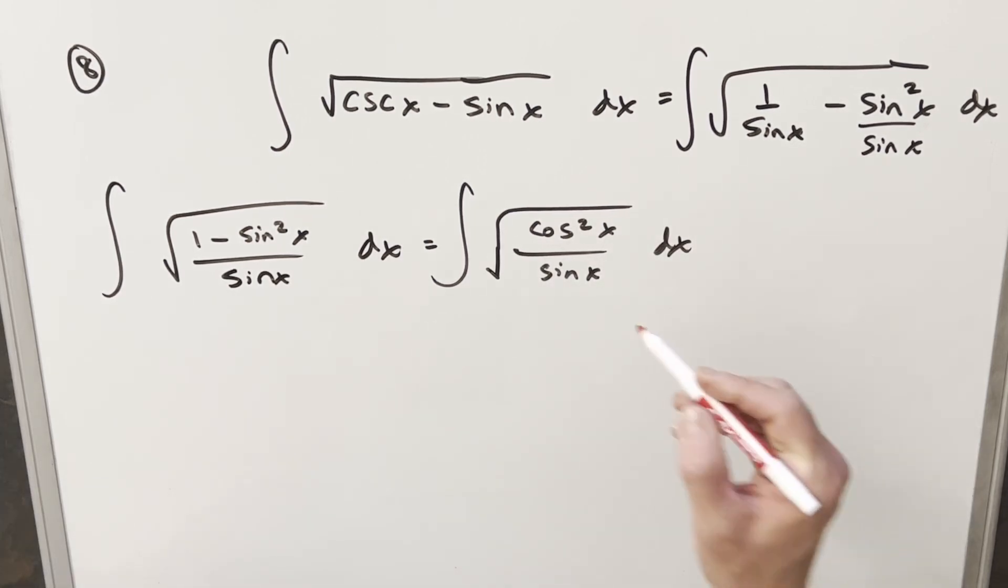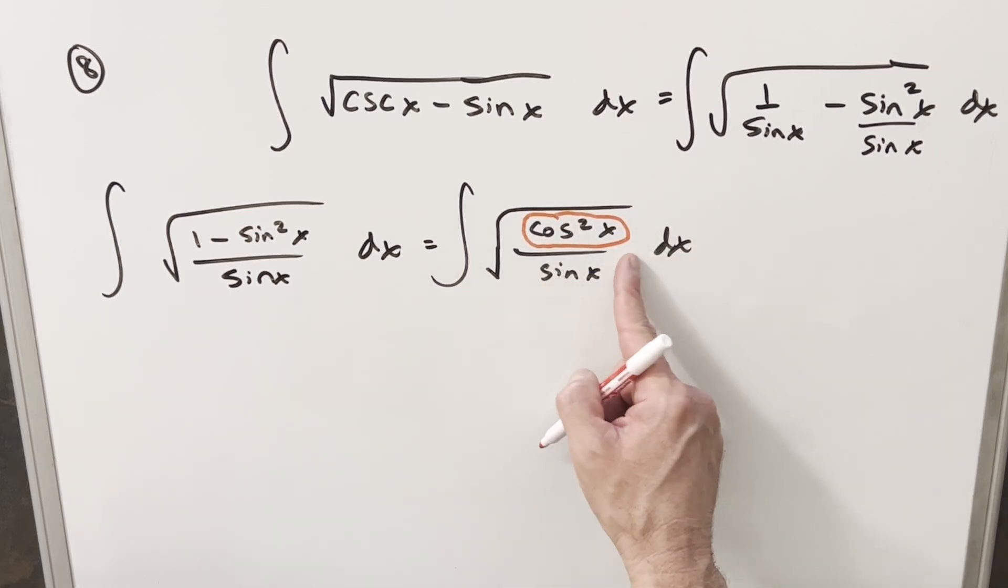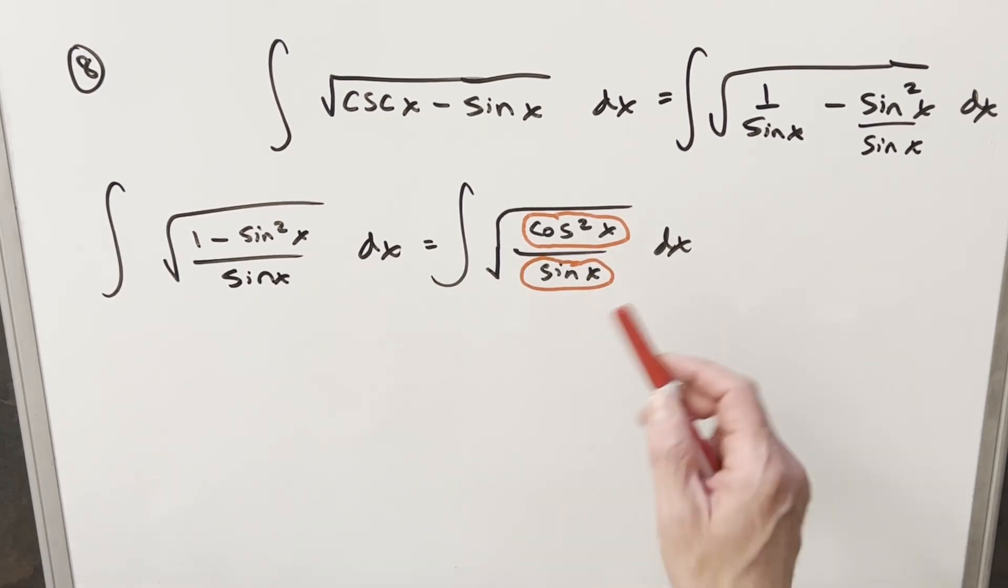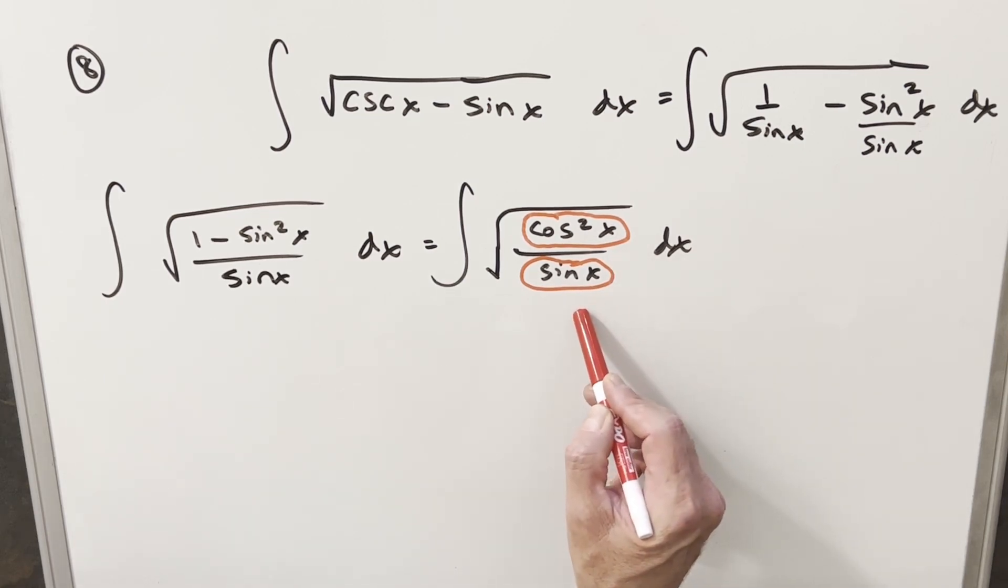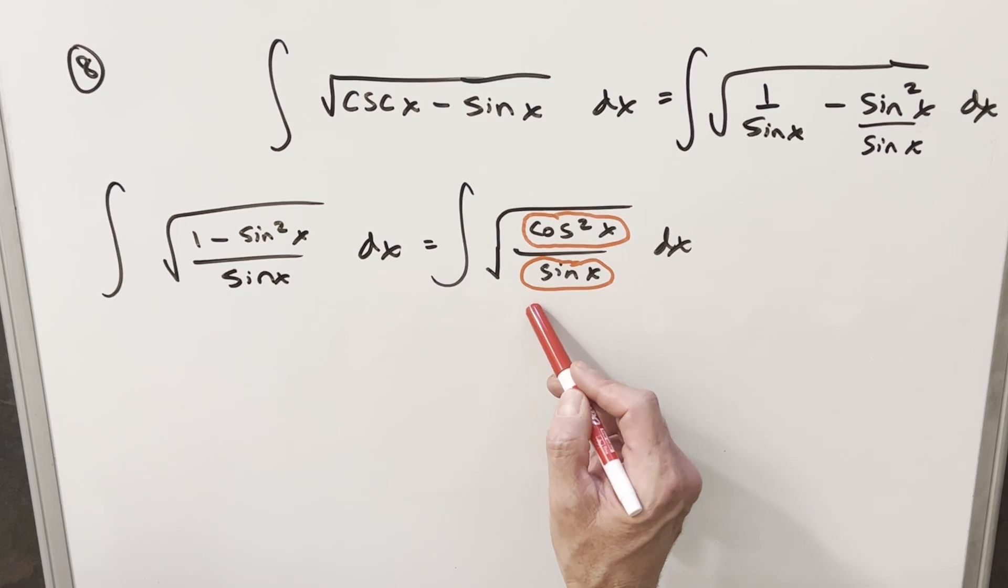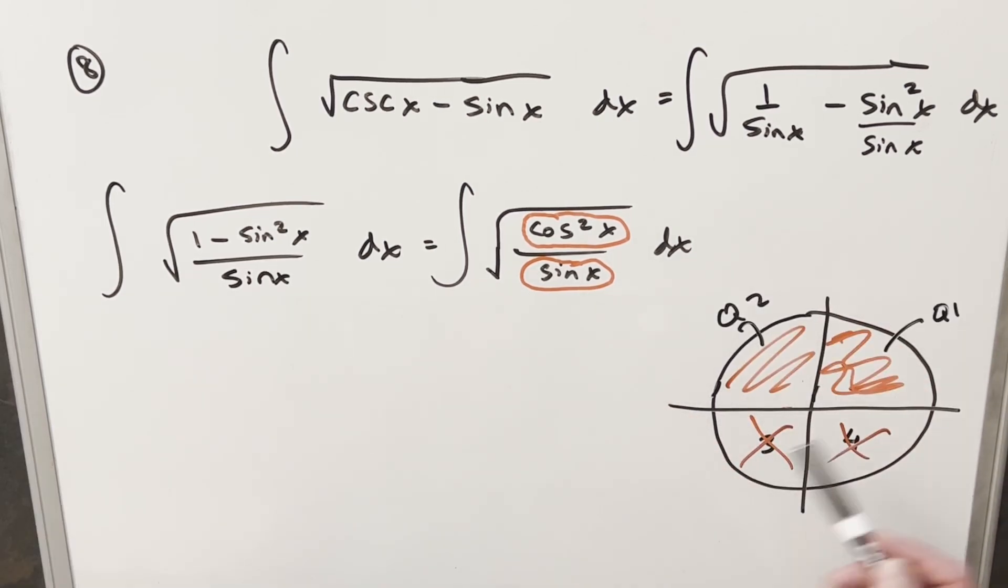At this point, I just want to notice a couple things. For cosine squared x, this always has to be positive, because even when we have negative values for cosine, we square them and they become positive. But sine x is going to be positive in quadrants one and two, and it's going to be negative in quadrants three and four, the bottom half of the unit circle. Because the numerator is always positive, we can't really have negative values of sine here, because then the whole thing is going to be negative inside the radical. We need this to be real. So our domain for this thing, if I just draw the unit circle, for our domain of this integral, we're only considering values in quadrant one and two, and rejecting quadrant three and four.